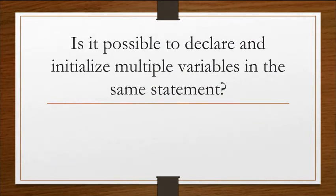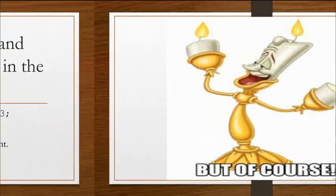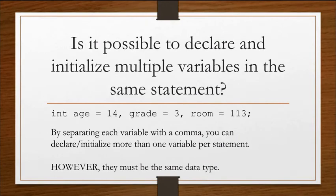So, is it possible to declare and initialize multiple variables in the same statement? But of course. So on this line of code, you see int age equals 14 comma grade equals 3 comma room equals 113 semicolon. By separating each variable with a comma, you can declare and initialize more than one variable per statement. However, they must be the same data type.